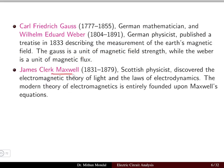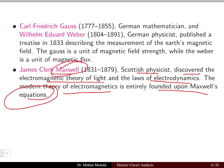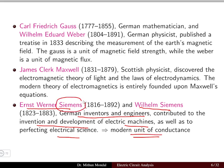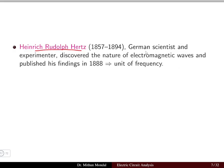James Clerk Maxwell, a Scottish physicist, discovered the electromagnetic theory of light and the laws of electrodynamics. The modern theory of electromagnetics is entirely founded upon Maxwell's equations. Ernest Werner Siemens and Wilhelm Siemens, German inventors and engineers, contributed to electric machines, and the unit of conductance — the Siemens — is named after them. Heinrich Hertz, a German scientist, discovered the nature of electromagnetic waves in 1888, and the unit of frequency is named after him.